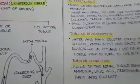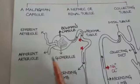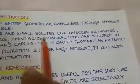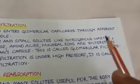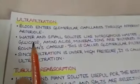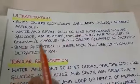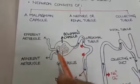In ultrafiltration, the blood enters the glomerular capillaries through afferent arterioles. We can understand from this diagram that the blood enters the Malpighian capsule through afferent arterioles. After this, water and small molecules like nitrogenous wastes — that is ammonia, urea, uric acid and creatinine — as well as glucose, amino acids, and mineral ions are filtered from the blood and stored in the cavity of the Bowman's capsule. This filtrate is called the nephric filtrate.